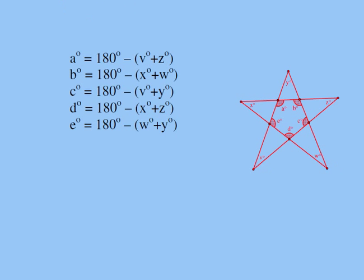Now we can conclude that angle a is really 180 minus angle v and angle z. Note, angle a, angle v, and angle z are the three angles of this triangle. So angle a has to be 180 minus v plus z.